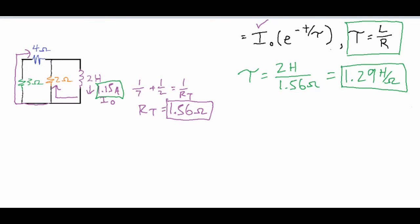From there we can solve for I(t). Our I(t) is our initial current 1.15 times e to the negative t over tau. That is our current with respect to time.